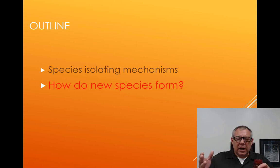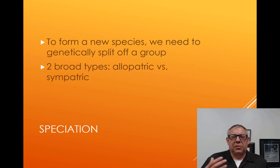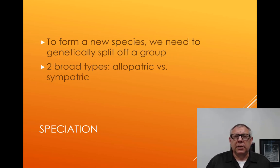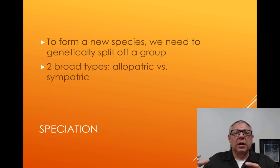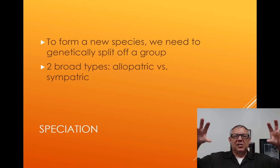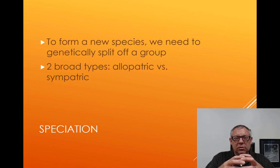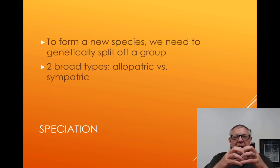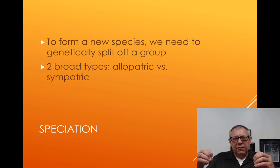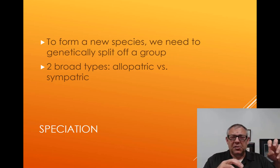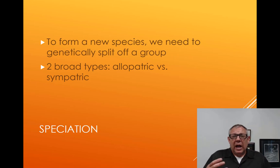So that's just an idea of how we can keep species apart. Now let's talk about how we get new species. Basically, the idea is you have to have a small group that gets genetically split off from a larger group — that's how new species evolve. When we talk about two species with a common ancestor, that ancestral population gets split. A group splits off, becomes genetically isolated, and forms a new species.